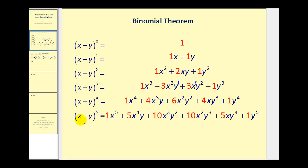If we jump down to the quantity x plus y to the fifth, notice we have x to the fifth, then x to the fourth, y to the first, x to the third, y to the second, and so on. So as we go from left to right, we lose factors of x and pick up factors of y.